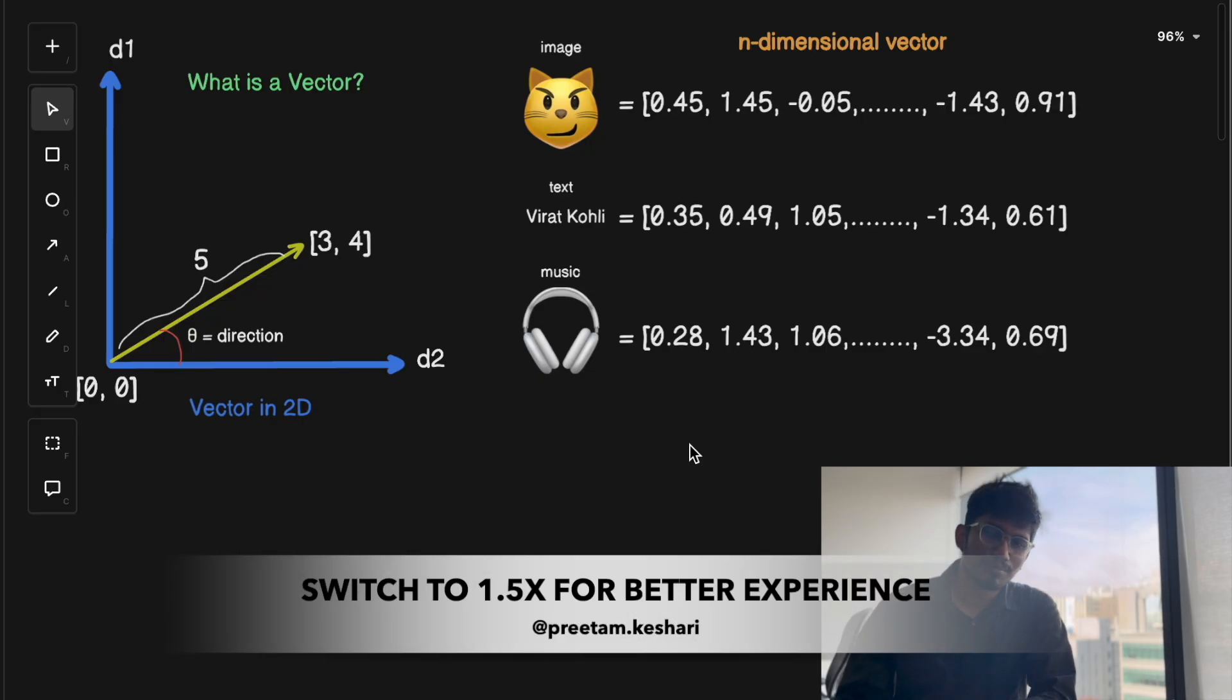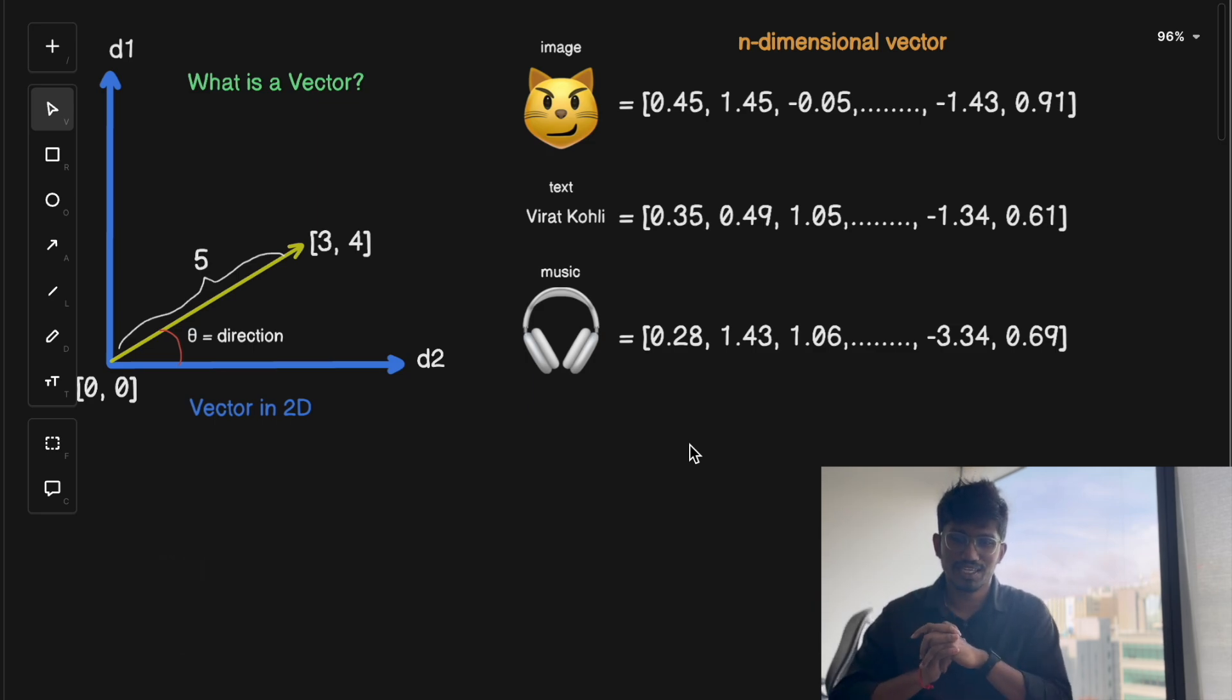Hey everyone, welcome back to the channel. Today we are diving into how Spotify and YouTube music use something called vector database to recommend music that is just made for you. It sounds complex, but by the end of this video, you will not only understand how Spotify makes perfect music recommendations for you, but also how these concepts are being used in shaping the future of personalized technology.